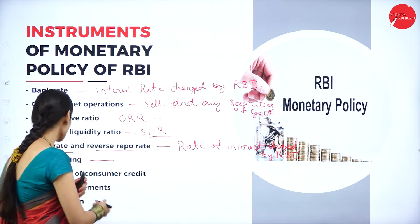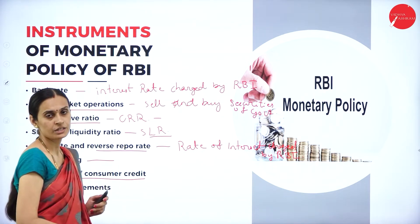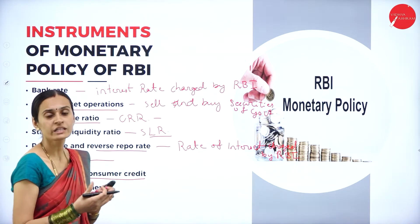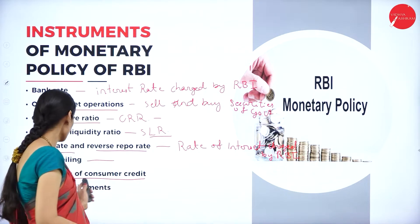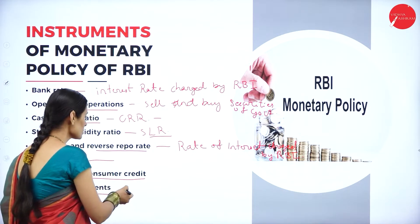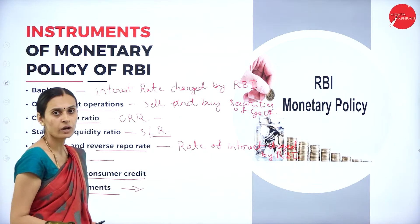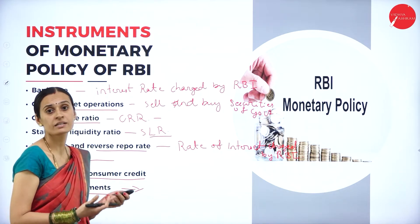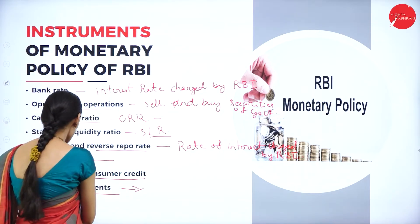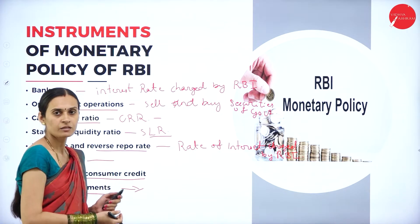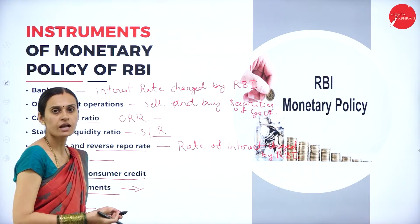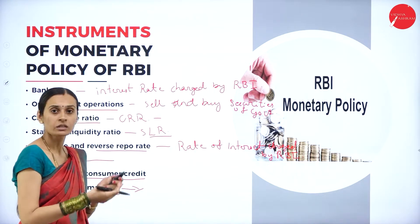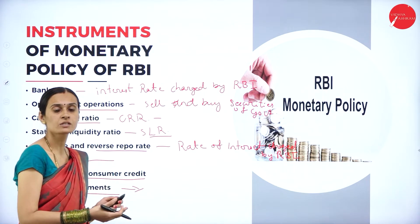The next instrument is regulations of consumer credit, which involves the determination of volume of credit by all commercial banks. Then margin requirements — loans are granted by all commercial banks against securities to the public. And finally, moral suasion, under which techniques and different advice are given by RBI to control the monetary system of the country.